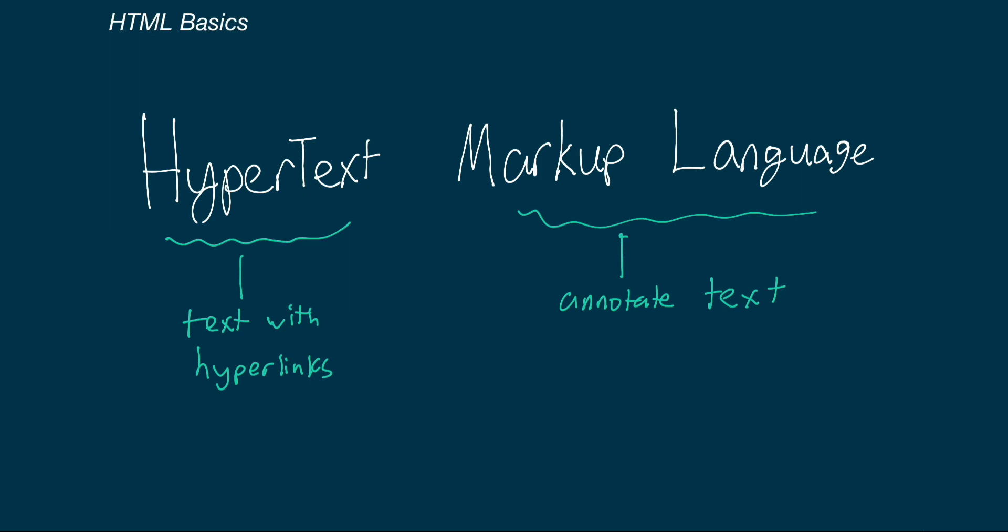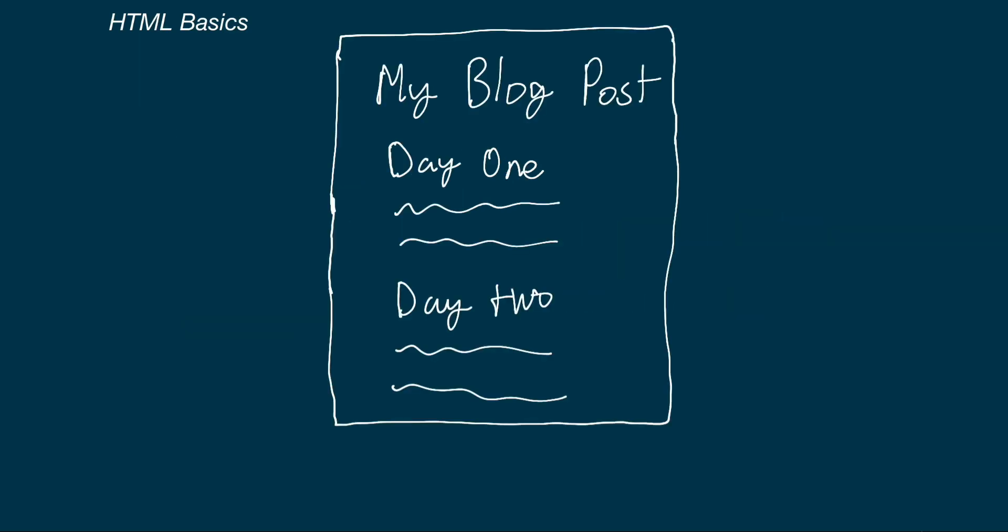For example, we will need to differentiate between a heading and a paragraph. Looking at a blog post example titled My Blog Post with two sections — day one and day two — we as humans can look at this and just understand what everything is. We see a heading on top and two sections below it. But a browser can't do this, so we need a way to tell it what everything is, and we do that by annotating it.